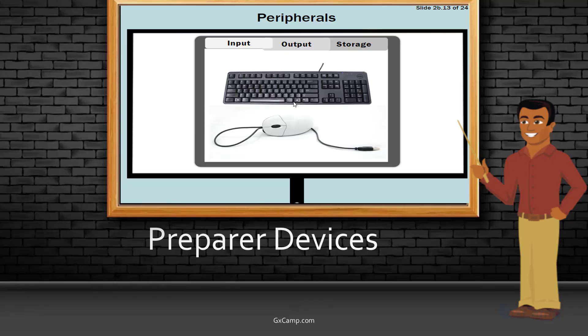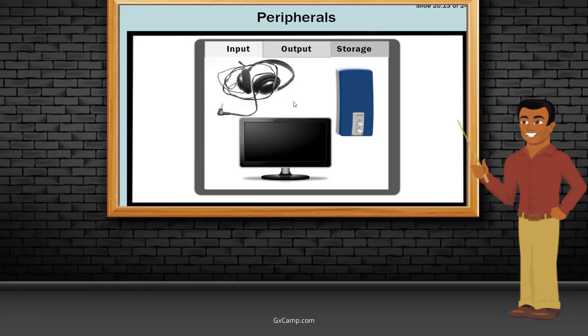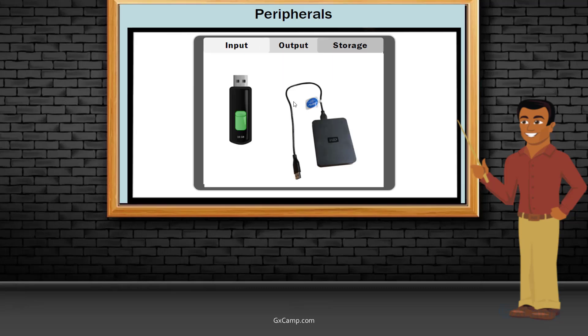Peripheral devices include: keyboard, mouse, microphone, monitor, speaker, USB device, flash card, DVD reader, and external storage device.